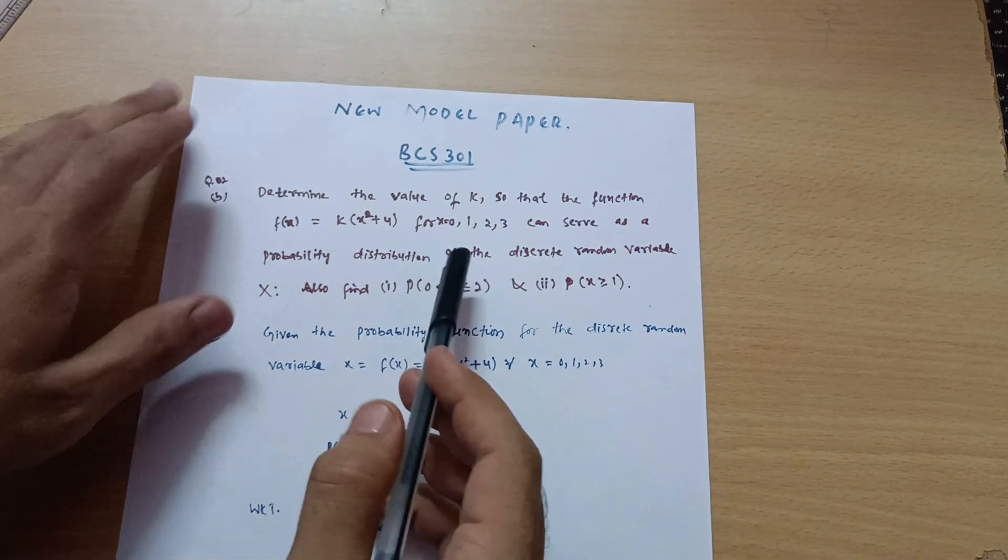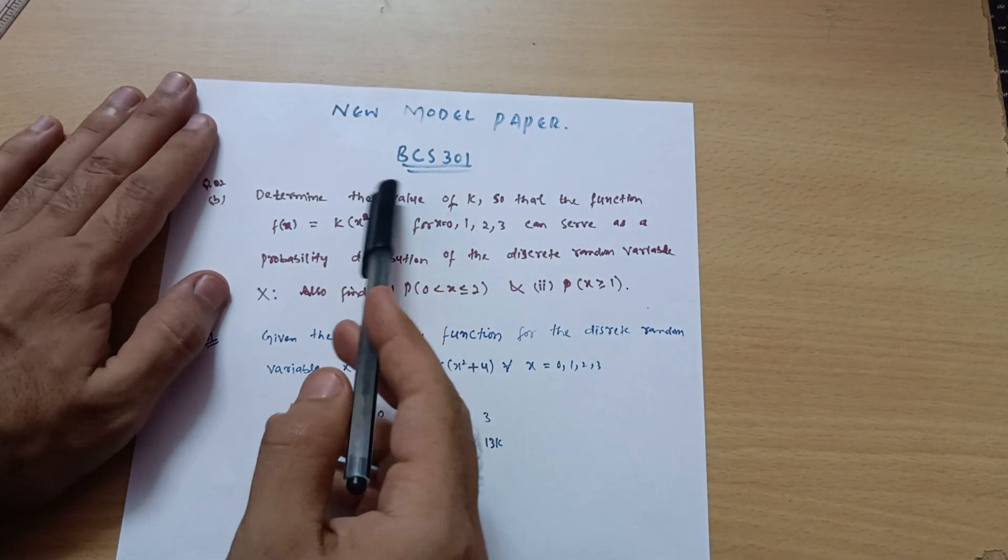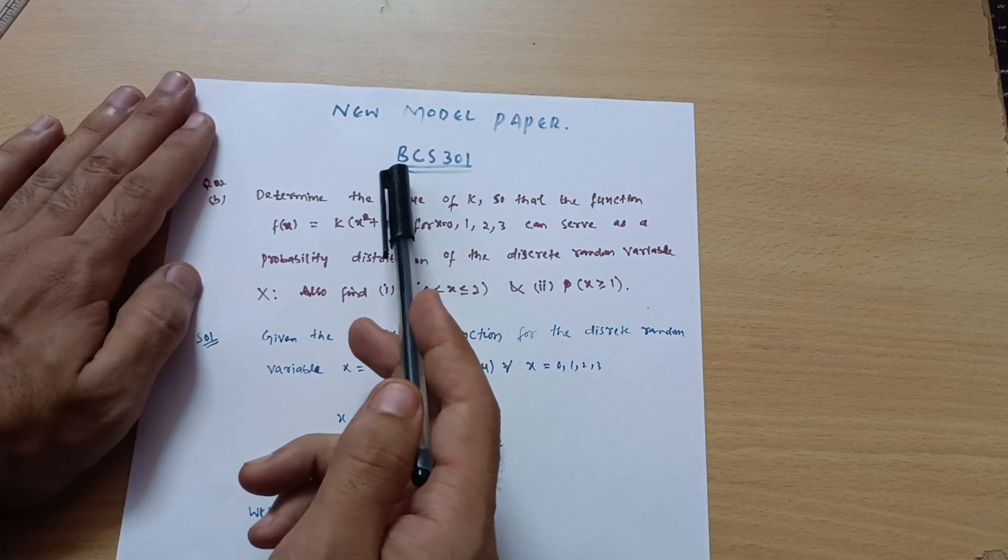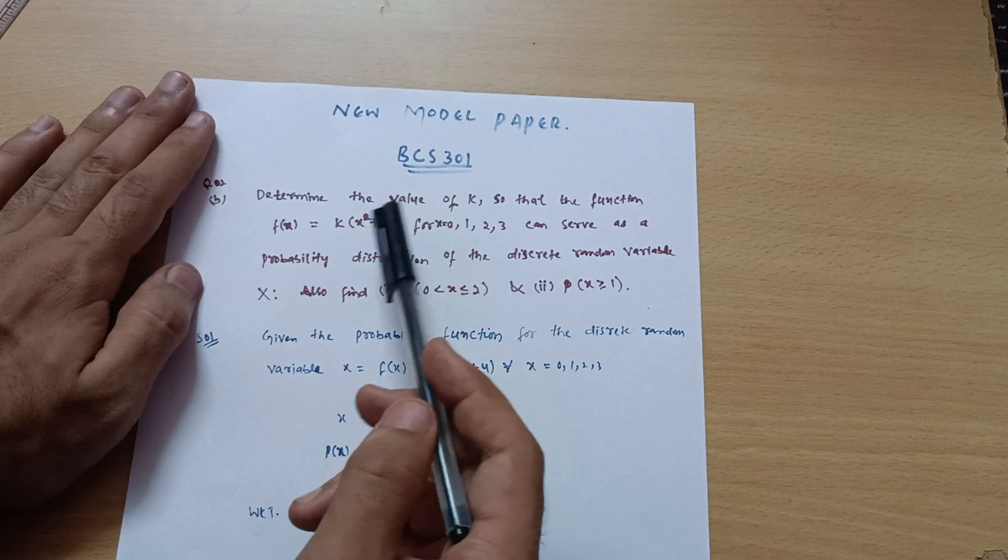Hello everyone and welcome back again. We are discussing the model question paper for the mathematics subject third semester CSE stream. BCS 301 is the subject code.